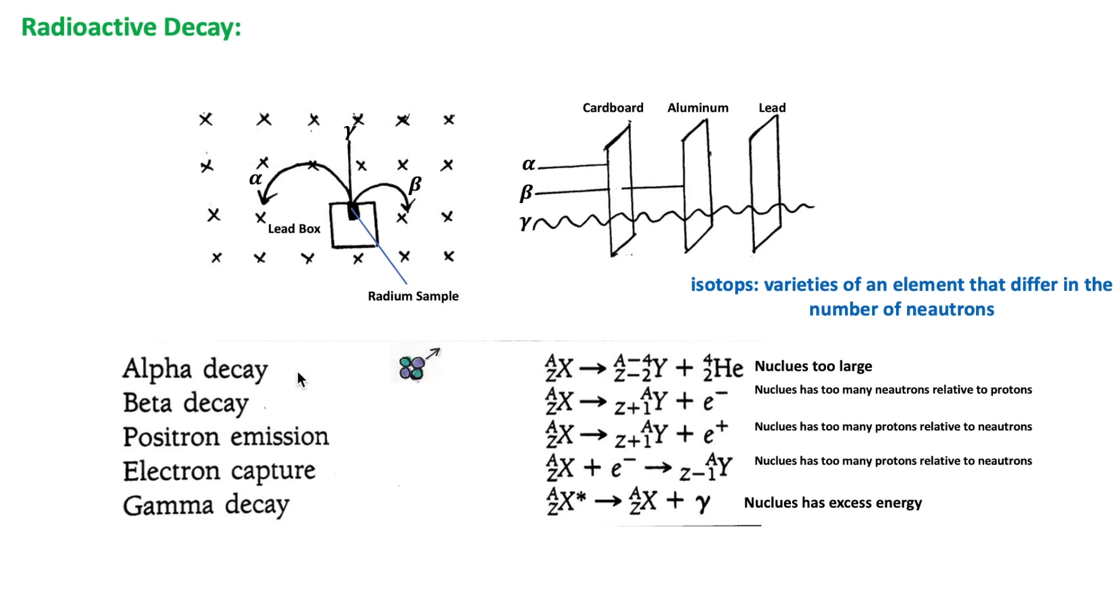The reason for alpha decay is that the nucleus is too large. The emission of an alpha particle will reduce the size of the nucleus. The atomic number of the new element is less by two and the mass number is less by four.